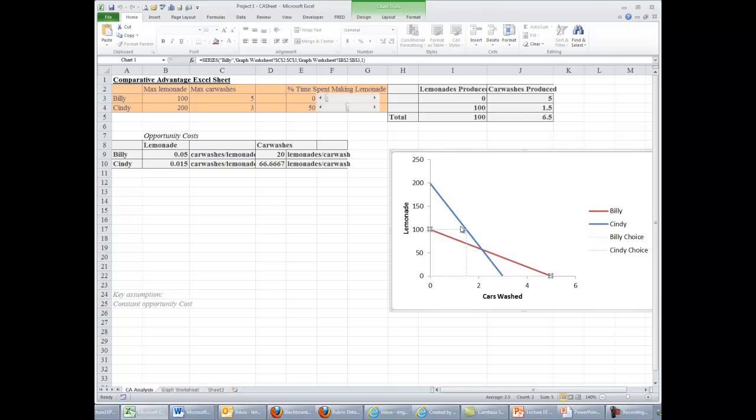Cindy also, naturally, would have her own production possibility frontier. Anywhere along this blue line is a combination of lemonades on the one axis and car washes on the other axis that can be produced. So she could do 200 lemonades but no cars, or split the time half and half doing 100 lemonades and one and a half cars, or anywhere on this line. It's just a matter of dividing your time in that way. So that's the most basic level of what a production possibility frontier looks like.